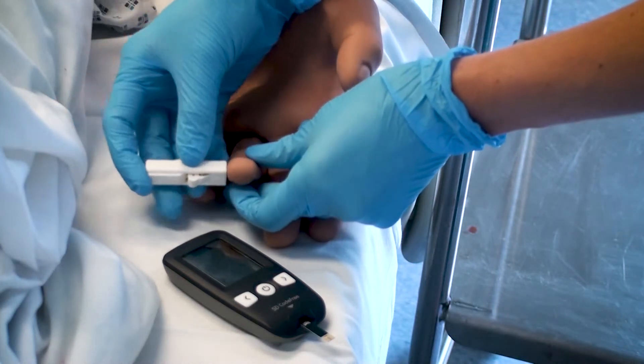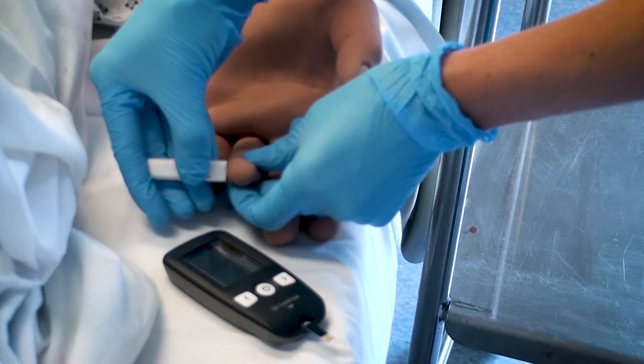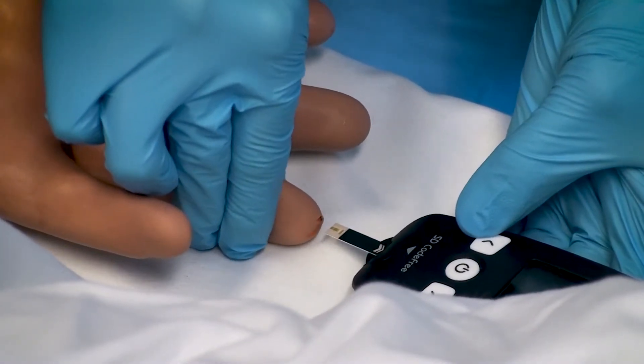Hold the side of the thumb or finger firmly, release the needle and apply gentle pressure to the digit to obtain a sufficient drop of blood.